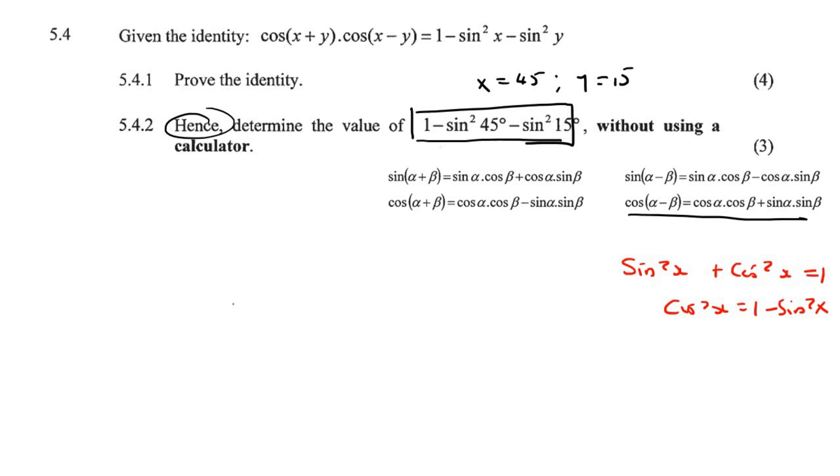So the way that these hence questions work is that you're going to use the previous information. So you see how we saw that this is the same as that. But we know now that this is equal to that. So we're actually going to use this one. So we're going to use cos(x+y) cos(x-y). And so x is 45 and y is 15.